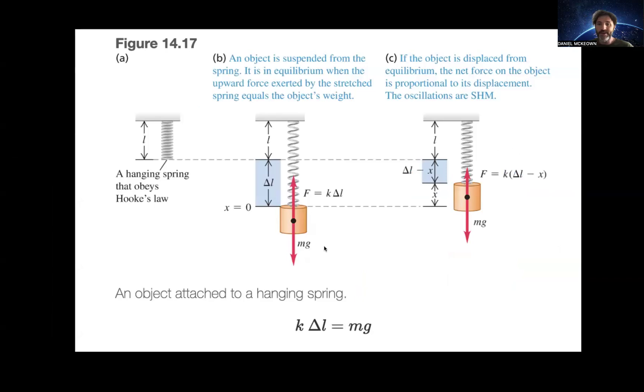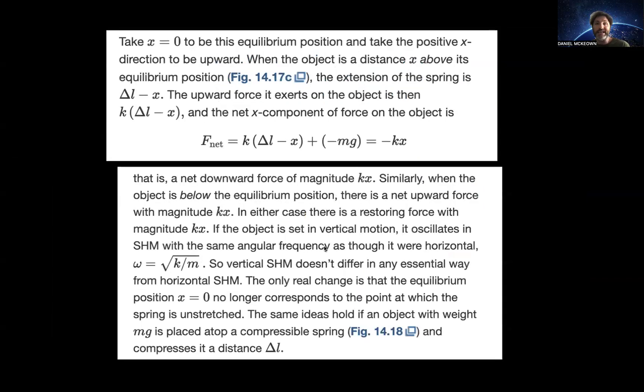And then if we take X zero to be this new equilibrium position, the position where it comes to rest, and if we hang the mass, it just pulls down a little bit. That's the new equilibrium position. And then the positive X direction is going to be upward. When the object is a distance X above its equilibrium position, the extension of the spring is delta L minus X. That's how much displacement there is going on at that point.